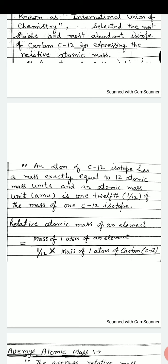And an atomic mass unit (amu) is 1 twelfth of the mass of one carbon 12 isotope.